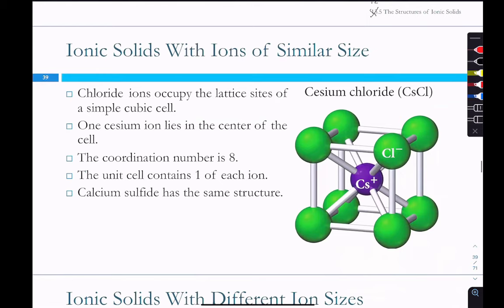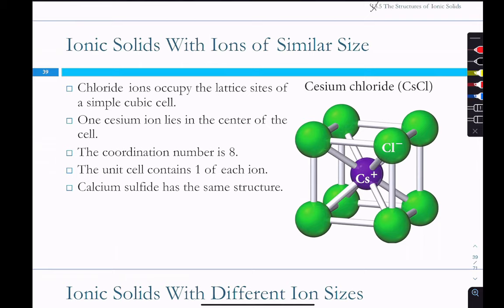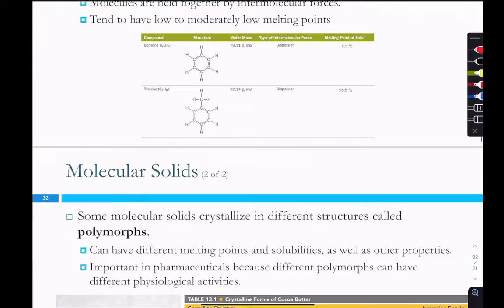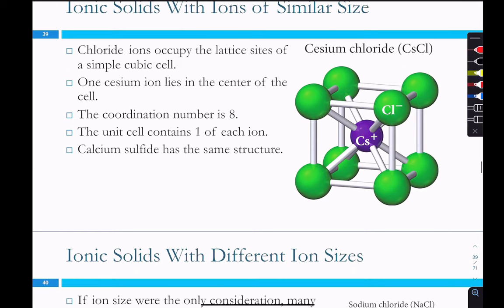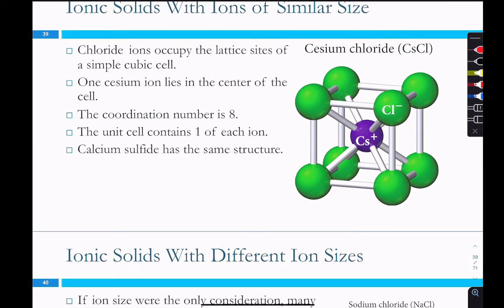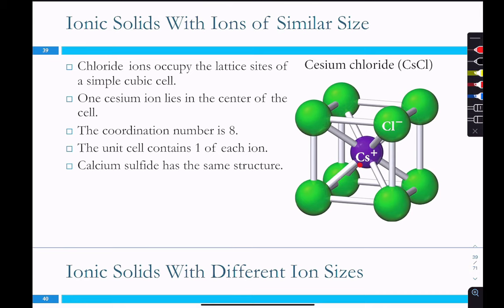If you've got an ionic solid with ions of similar size, this is the body-centered cubic cell — the cesium chloride structure. The simple cubic cell would just be the chloride ions on the outside corners, and then we put the cesium in the middle, which makes it the body-centered cubic. So in calcium sulfide, we replace cesium with calcium and the chloride with sulfide — again, ions of similar size.